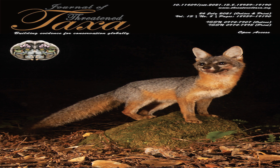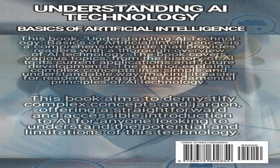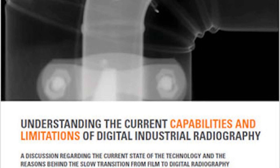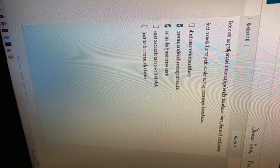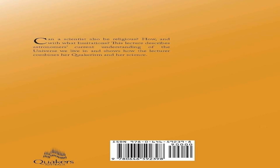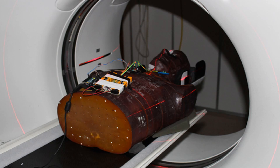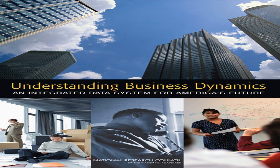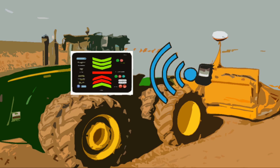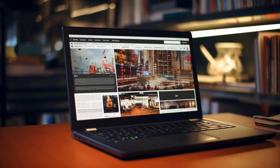Although our understanding of physics has progressed significantly, it is important to recognize the limitations of our current knowledge. The laws and principles that govern the universe are based on extensive research and experimentation, but they are not necessarily complete. There may be fundamental aspects of physics that are yet to be discovered or fully understood. Our understanding is shaped by our observations and interpretations of the natural world, but it is possible that there are phenomena or principles that exist beyond our current comprehension. It is within the realm of these limitations that the potential for faster-than-light travel may exist, waiting to be revealed through further scientific exploration.